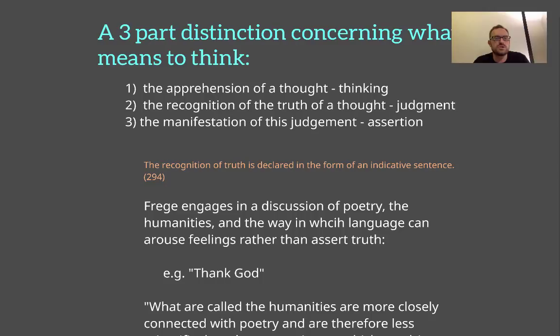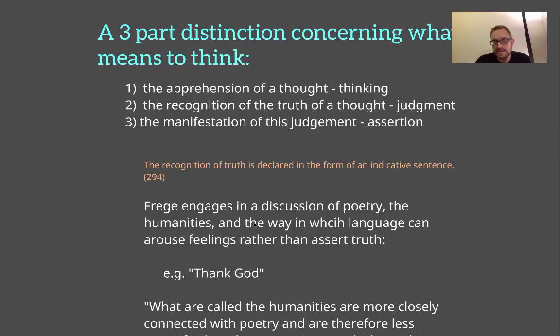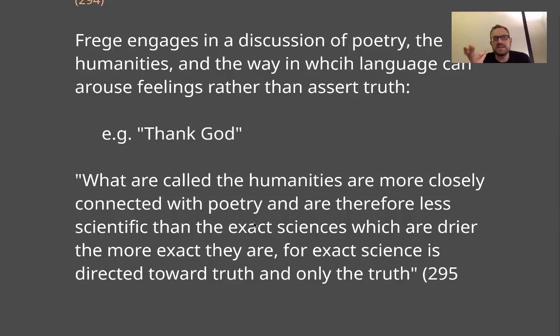On page 294 of the Mind article, Frege articulates the idea that the recognition of truth is always declared in the form of an indicative sentence. Frege is going to engage in a discussion of poetry because in poetry you have language, but you don't quite have truth conditions of language, even if poetry uses indicative types of sentences. Someone might say "love is a flower growing in the sun" — it's an indicative type sentence, but it doesn't quite have the same register of truth conditions of the type of statements he's interested in.